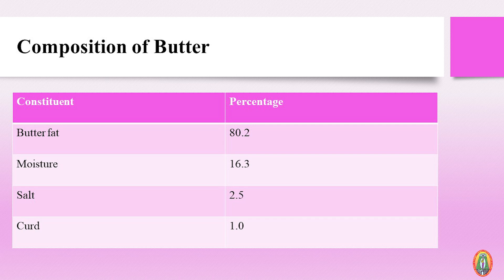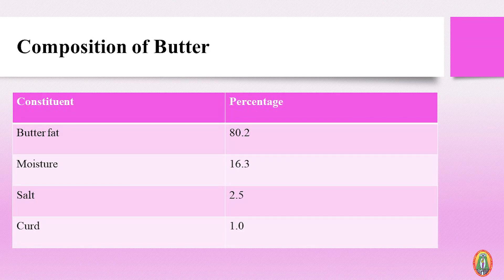Talking about the composition of butter, it has a high concentration of milk fats, more than 80%. Water is around 16%, curd percentage is 1.5%, and common salt will be up to 2.5%.